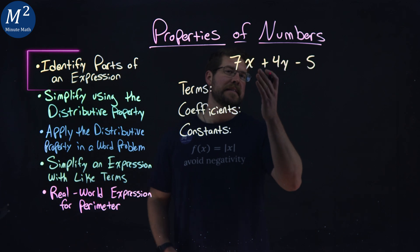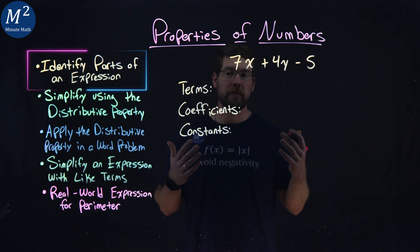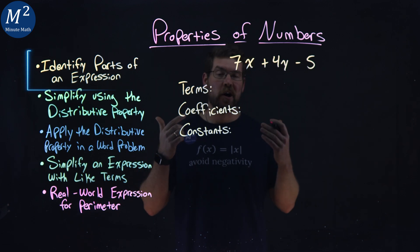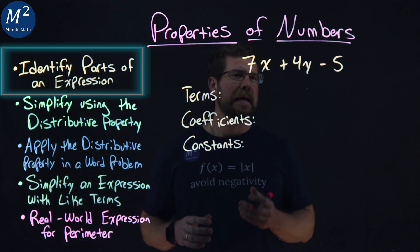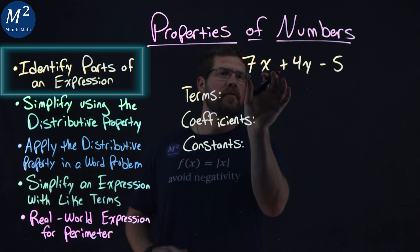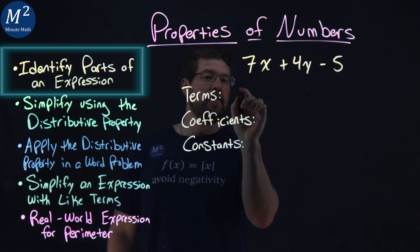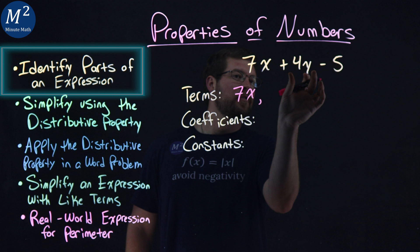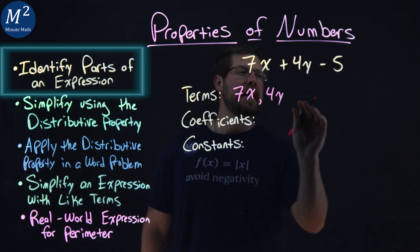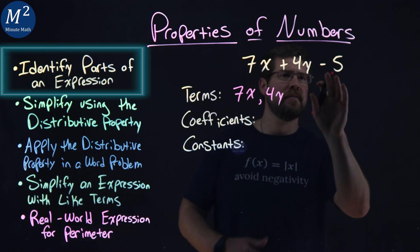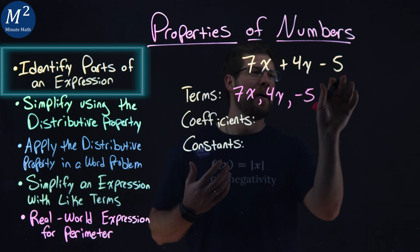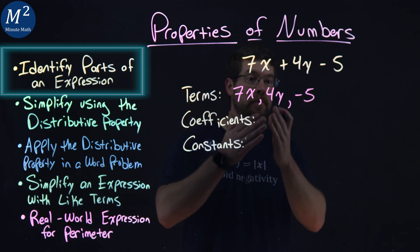We have our expression 7x plus 4y minus 5, and we want to identify our terms, our coefficients, and our constants. Let's first talk about the terms — that's each part being separated by addition or subtraction. So our first term is 7x. The next term separated by addition is 4y. And lastly, we have the minus 5. The subtraction is like adding a negative 5, so we can call that term negative 5. So now we have our three terms.